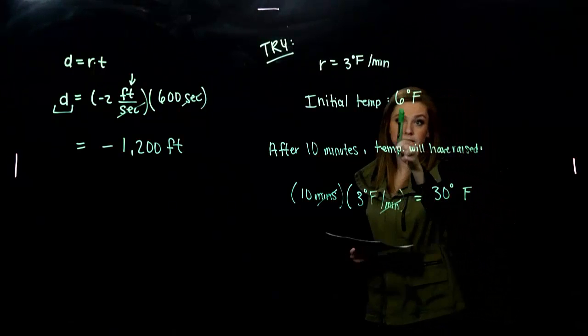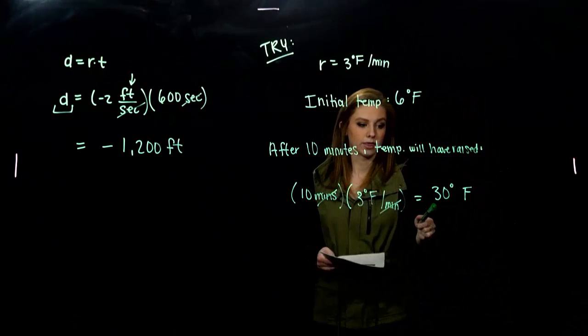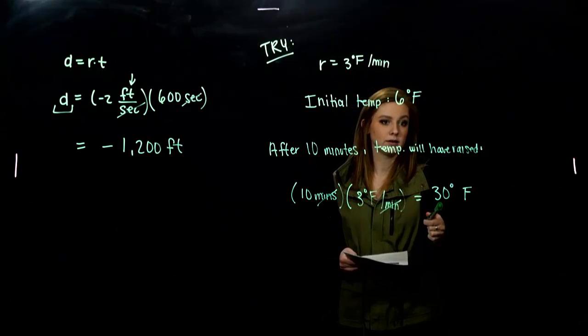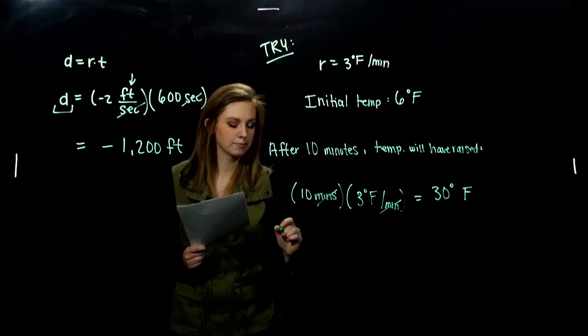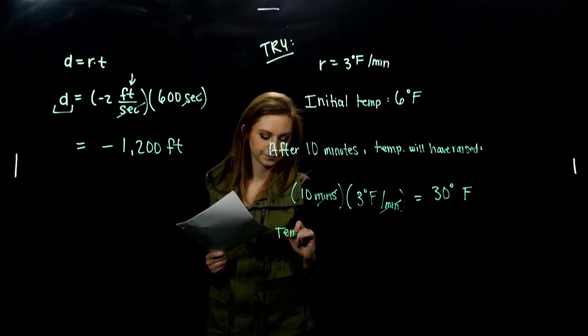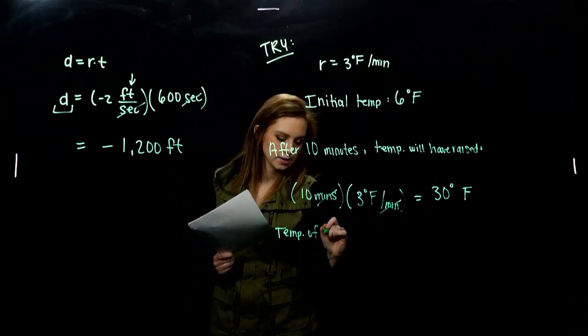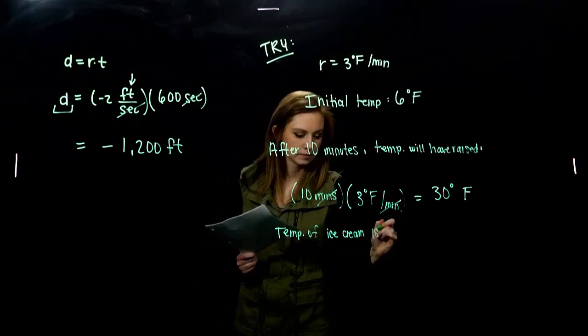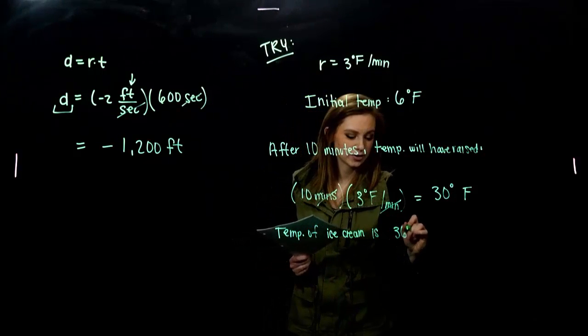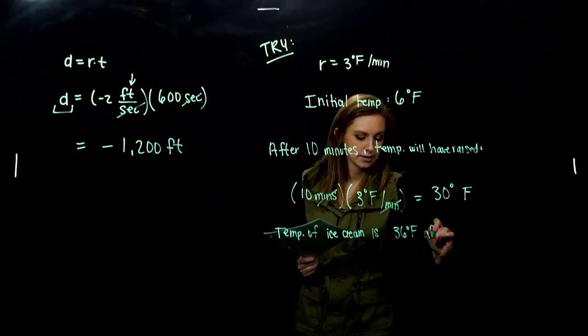So, initially I was at 6. 10 minutes later, I've gained 30 more degrees. So, after 10 minutes, what is the temperature of my ice cream? So, the temp of ice cream is 36 degrees Fahrenheit after 10 minutes.